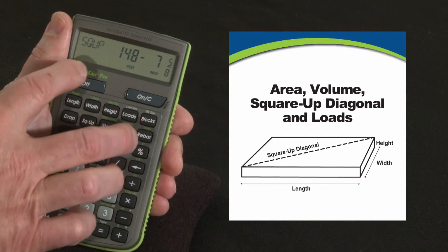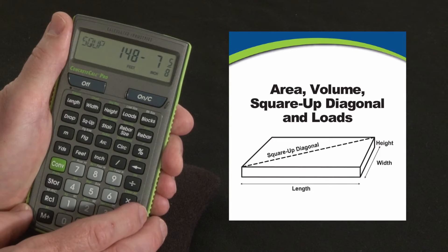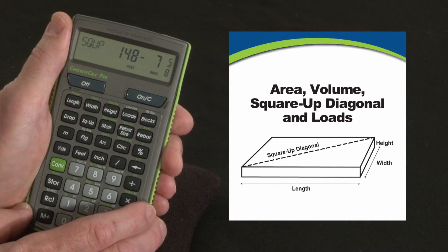Press it again, there's our square up diagonal: 148 feet, 7 and 5 eighths inches, corner to corner. If you're setting those forms and you want to pull a diagonal, you better make sure it measures that to be square.